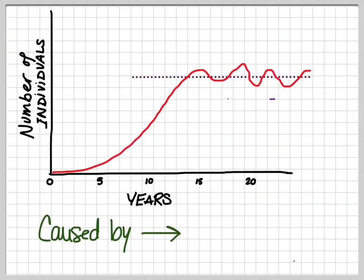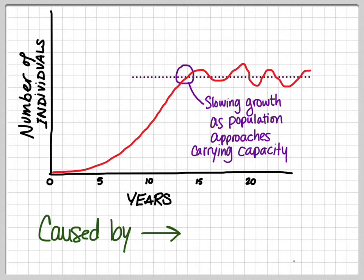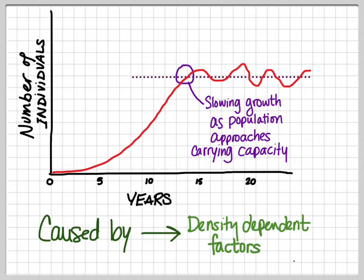Here's that very familiar graph showing a population that has started in a new place from a zero population size and grows exponentially for a while and then starts to slow down. Where does that change in growth rate occur? The slowing growth is as the population approaches that carrying capacity. When we see a population's growth limited near carrying capacity, we know that that limiting is caused by a density dependent factor. They've hit carrying capacity and now birth rates will tend to decrease, death rates will tend to increase, so overall the growth rate slows.